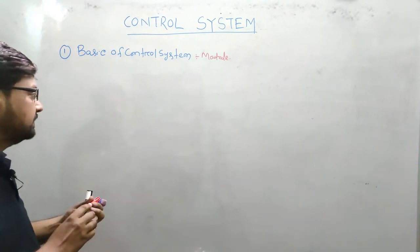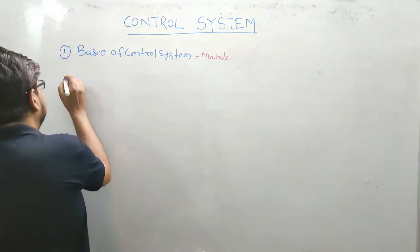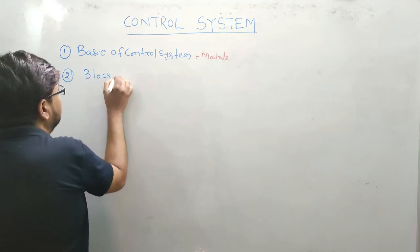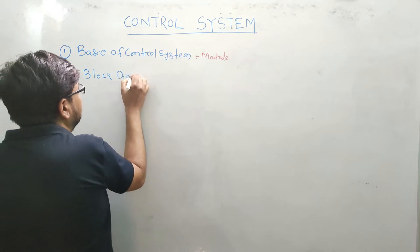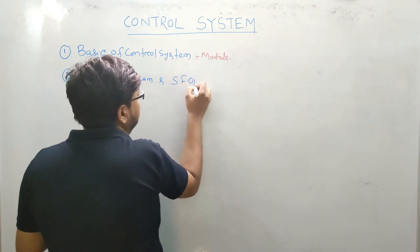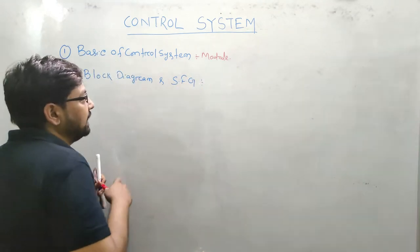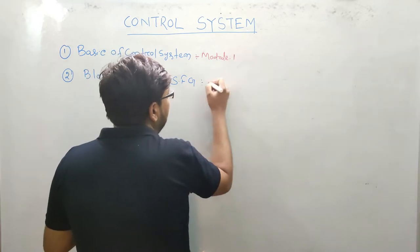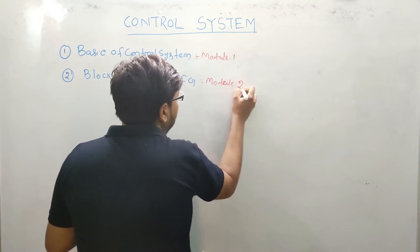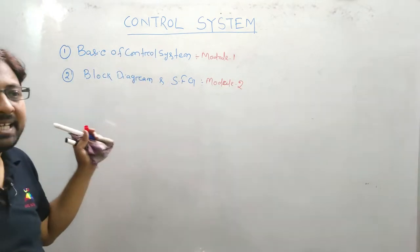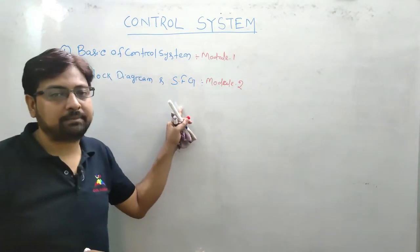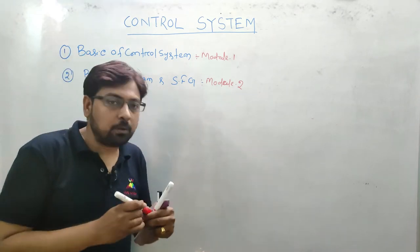Module 1 के बाद, second में आएगा मेरा Block Diagram and Signal Flow Graph (SFG) - वो आएगा मेरा Module 2 में. तो Block Diagram और Signal Flow Graph - यह Transfer Function को derive करने के लिए चाहिए. मेरे को Block Diagram और Signal Flow Graph चाहिए, तो उसको हम देखेंगे Module 2 में.